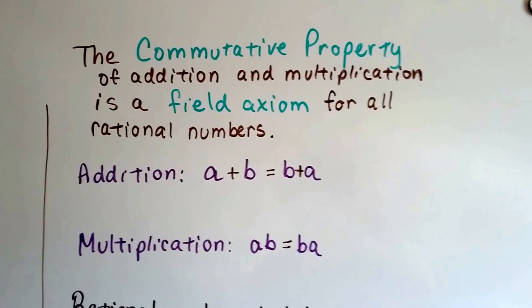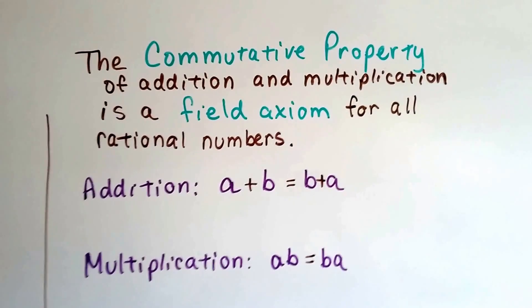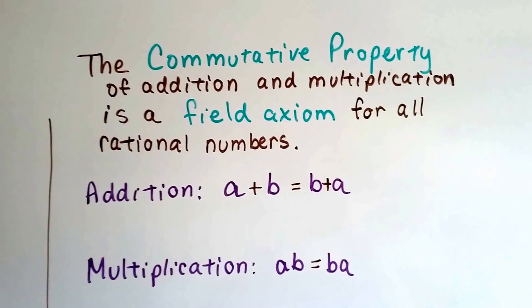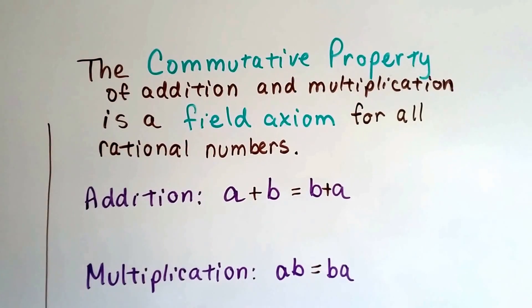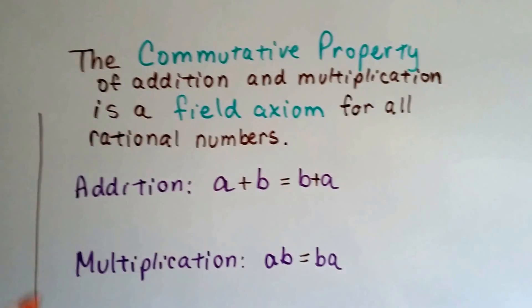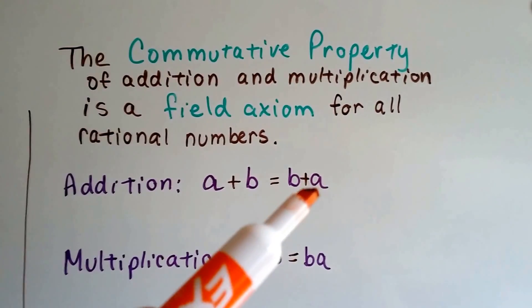The commutative property of addition and multiplication is a field axiom for all rational numbers. Now it's also a field axiom for real numbers because that includes rational numbers. But we're doing rational numbers in this one.